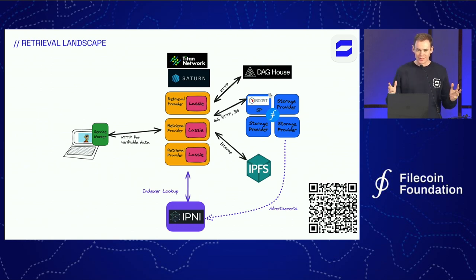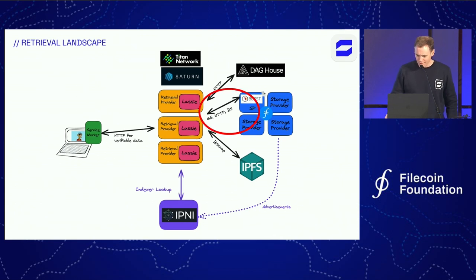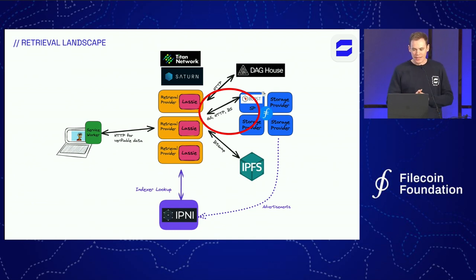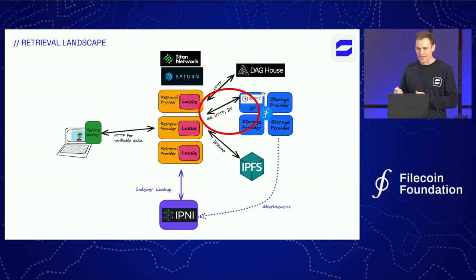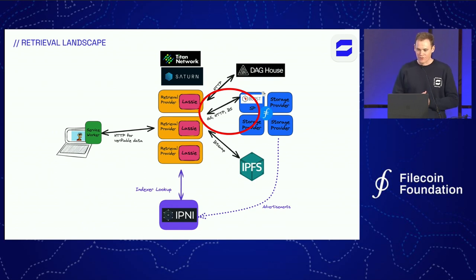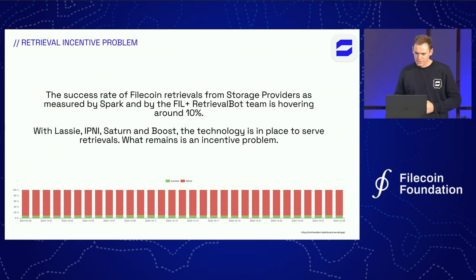If I was speaking a year ago, a lot of these technologies didn't exist. There's been a huge amount of work that has gone into the retrieval landscape over the last 12 months, which is really exciting. However, although the rails are there and in place for us to make these retrievals, we still have a retrieval incentive issue. I've circled in on the particular interaction where we're actually making retrieval requests to Filecoin storage providers. Even though we can do so over these different protocols, we still need to find a way to incentivize storage providers to serve those retrievals performantly and reliably.